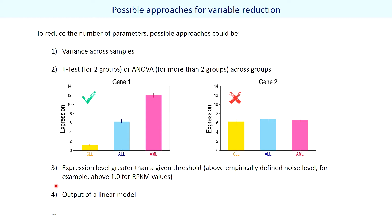Another very popular method for parameter reduction is to use the output of a linear model. In this case, we first train a linear model — for example logistic regression — using all parameters, probably with regularization. Then we select only the parameters which are most important for prediction according to this linear model. Finally, the selected parameters may be used to train a more accurate non-linear model.